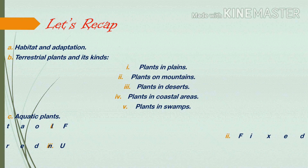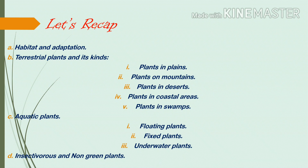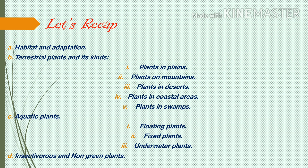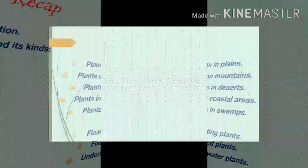Let's recap. Today we have studied about habitat and adaptation — their definitions. We learnt about terrestrial plants and their kinds: plants in plain areas, mountain areas, desert regions, coastal areas, and swamp areas. We also learnt about aquatic plants — those that grow in water — which are of three kinds: floating plants, fixed plants, and underwater plants. And we learnt about insectivorous plants and non-green plants.